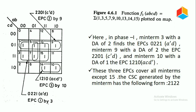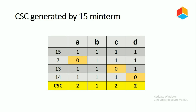These three essential prime cubes cover all the minterms except minterm 15. The candidate solution cube generated by minterm 15 has the form (2, 1, 2, 2). Minterm 15 is represented in binary form as (1, 1, 1, 1).